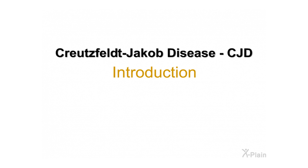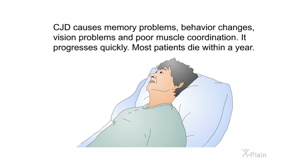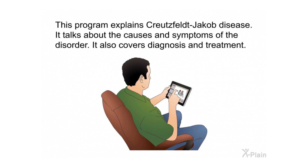CJD stands for Creutzfeldt-Jakob disease. It is a rare brain disorder that leads to death. Each year it affects about one person in every 1 million people worldwide. CJD causes memory problems, behavior changes, vision problems, and poor muscle coordination. It progresses quickly and most patients die within a year. This program explains Creutzfeldt-Jakob disease, its causes, symptoms, diagnosis, and treatment.